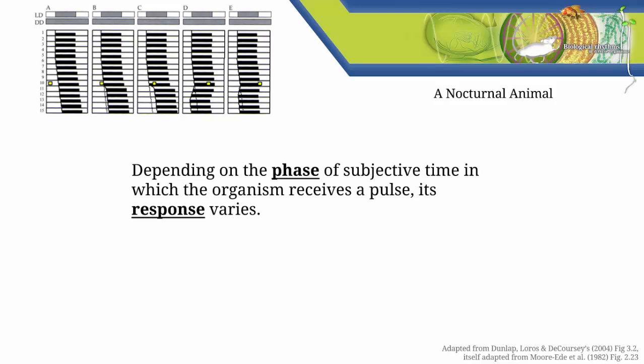We've just seen that depending on the phase of subjective time in which an organism receives a pulse, the organism's response to the pulse varies. To build a phase response curve, we're going to plot our data on a graph.